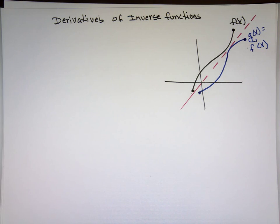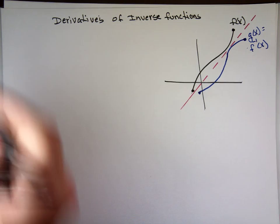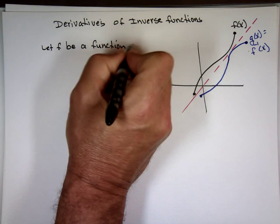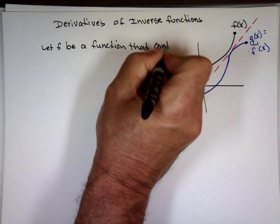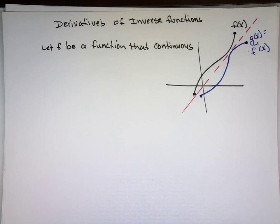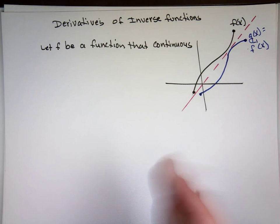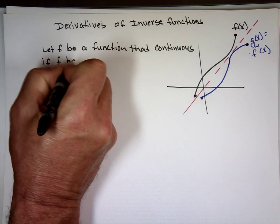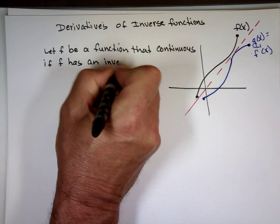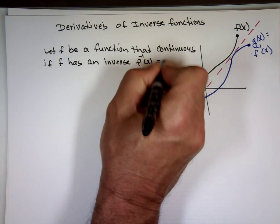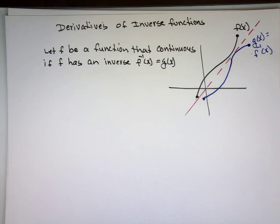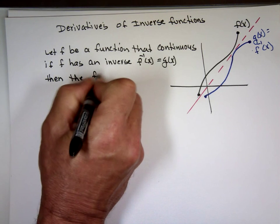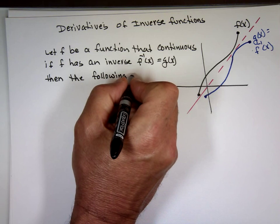So what our book is saying: let f be a function that is continuous — which that's the case — on the interval from here to there, which is continuous. If f has an inverse, which in this case it does, which we'll call f inverse of x, or I'll call g sub x, then the following statements are true.